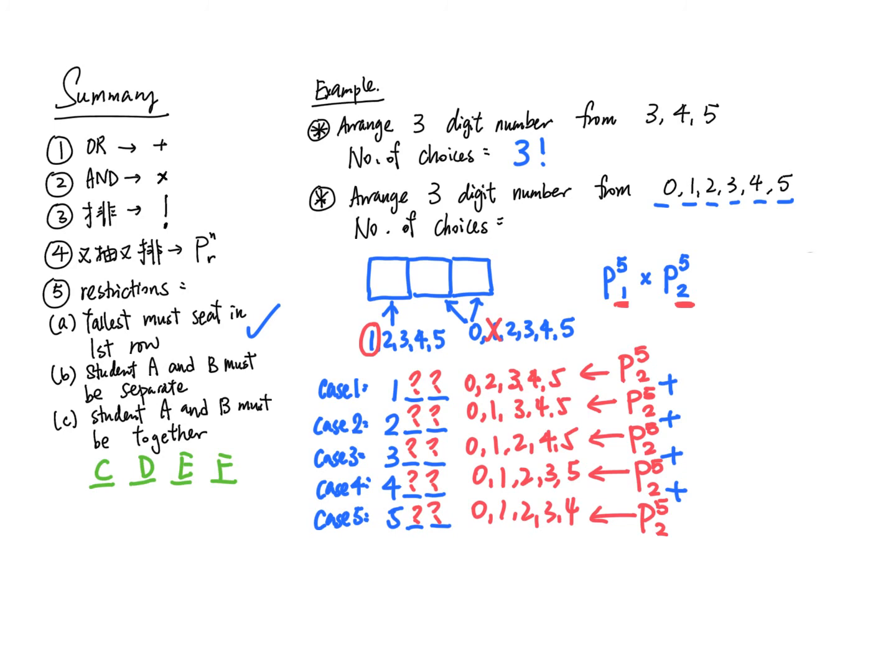For part b, if students A and B must be separated and cannot sit together, remember this technique: first arrange the other students C, D, E, F in their seats. Then consider what empty spaces are available for A and B. You'll find there are five spaces. From these five spaces, arrange two students to solve part b.